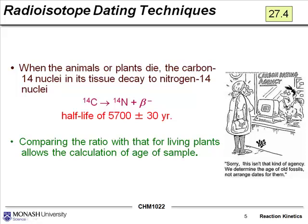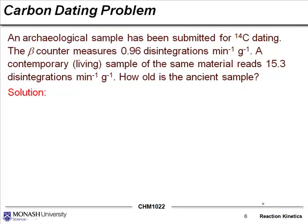Anyway, we can use this to advantage and the reason is pretty much because we actually know the half-life of carbon-14 sampling pretty well, to about 5,700 years. So by comparing the ratio of some old species with that for living plants, it actually allows the calculation of the age of that sample.